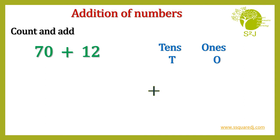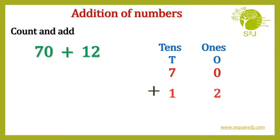70 plus 12. Let's arrange them vertically. 0 in 1's place and 7 in 10's place. Let's arrange 12. 2 in 1's place and 1 in 10's place.